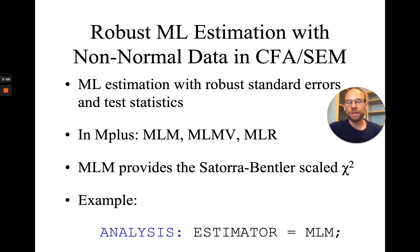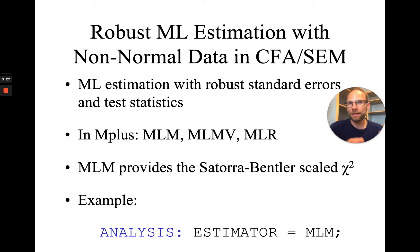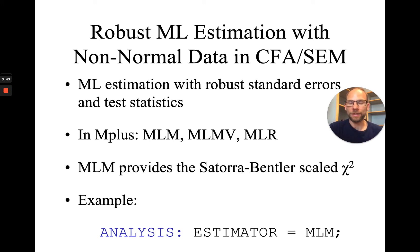One thing that is more complicated when you use these estimators is doing chi-square difference tests. I'll make a separate video about that issue — how you can do a chi-square difference test for nested models when you have scaled chi-square statistics, where you have to take into account a scaling correction factor. You can't simply subtract the chi-square values and degrees of freedom when you use MLM, MLMV, or MLR, because those are different from the regular ML chi-squares. You can still use the chi-square for the given model, but not the difference test by simple subtraction.